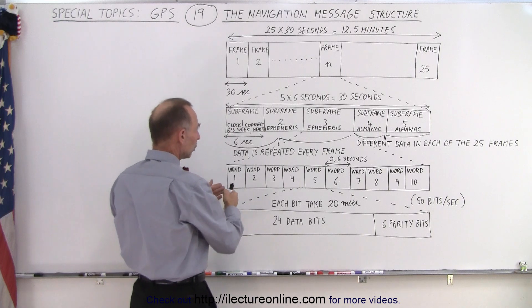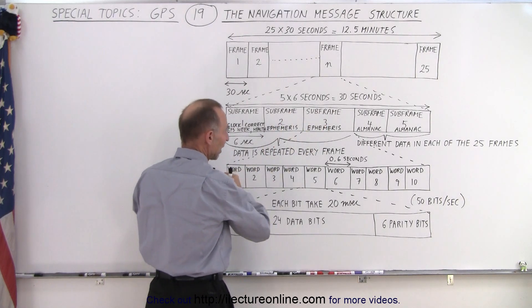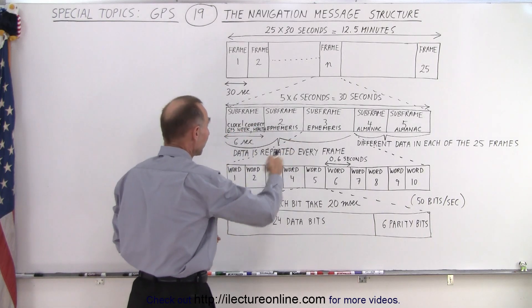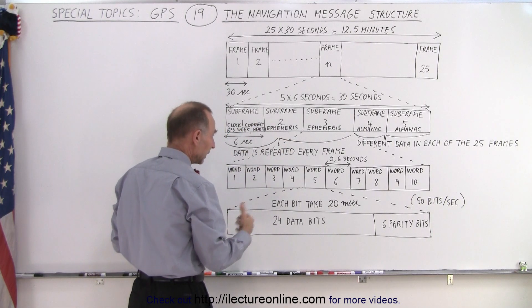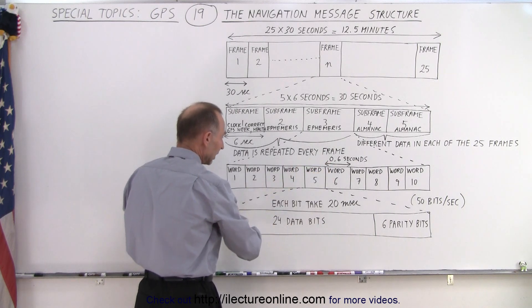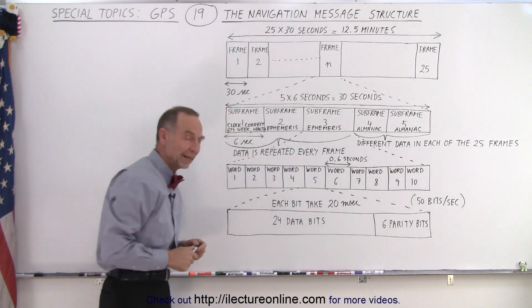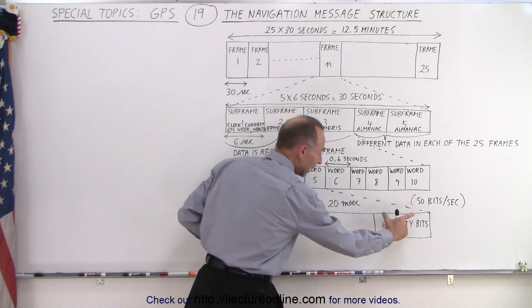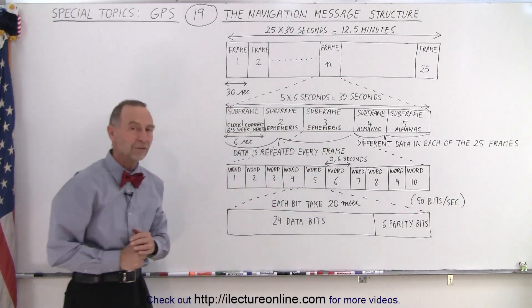Then, if we drill down again more, for each subframe we have 10 words. What's contained in the words, of course, differs a lot from subframe to subframe. And then, we can see that each word is divided into 30 bits. And the bits are divided into 24 data bits or useful bits, and then we have the six parity bits for checking.